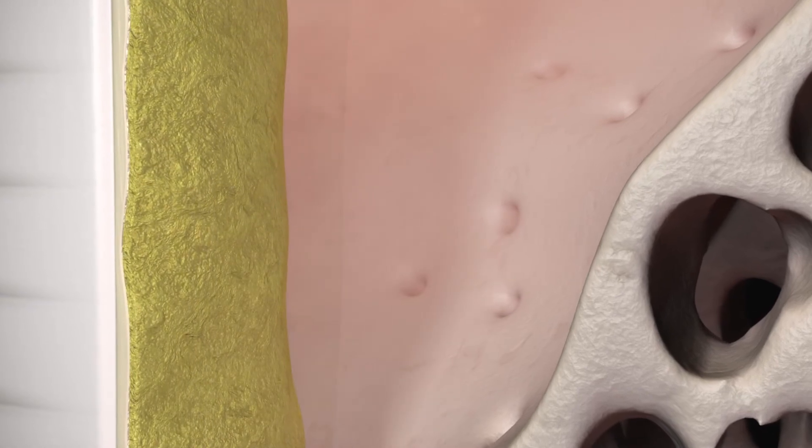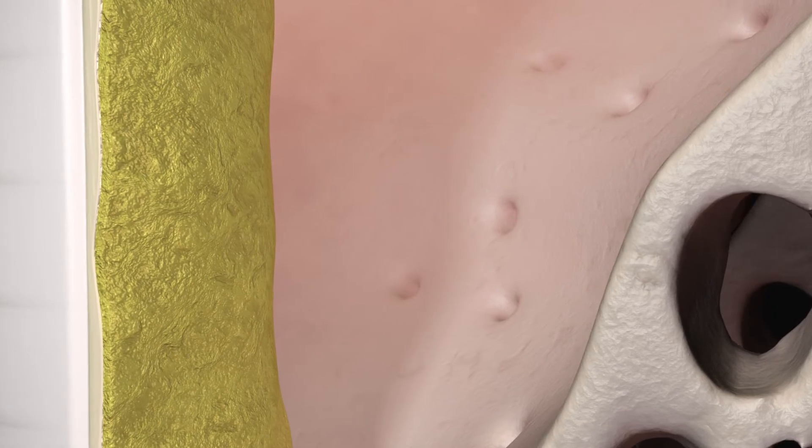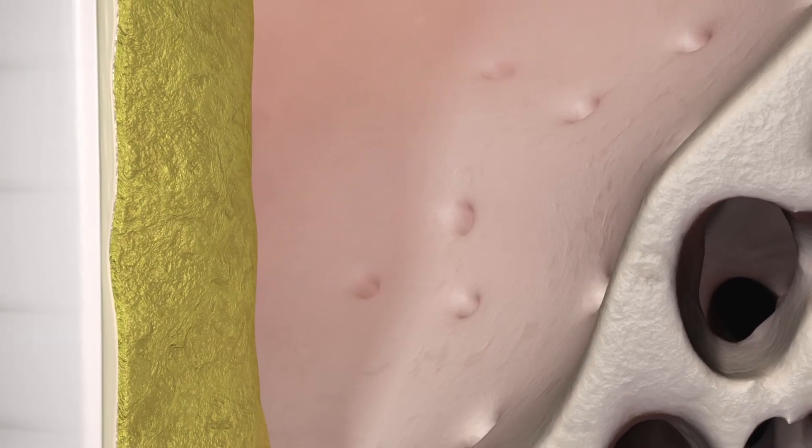Once applied, the Straumann Emdogene proteins, the amelogenins, precipitate out in seconds and form a matrix layer on the root surface.